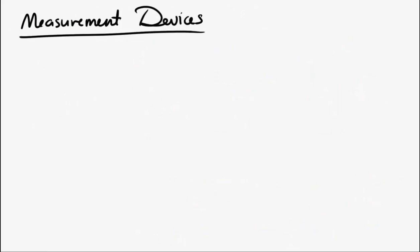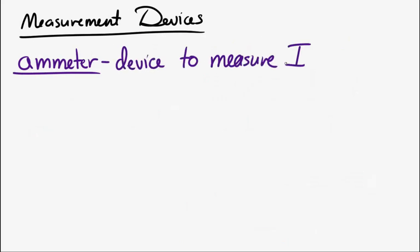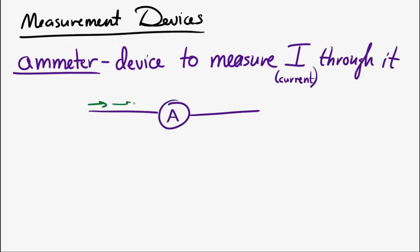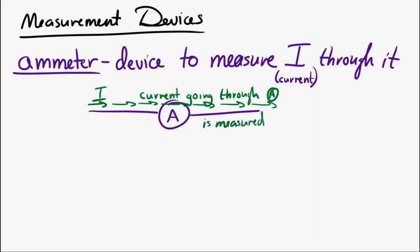We'll also encounter devices which measure current and potential difference. A device which measures current is called an ammeter — not an amp meter, an ammeter. An ammeter measures current that goes through it, and that's important. The current must pass through the ammeter for the ammeter to measure it. So the ammeter has to be placed in a circuit so that current flows through it, and that's the current the ammeter will measure.